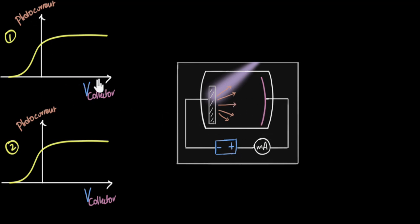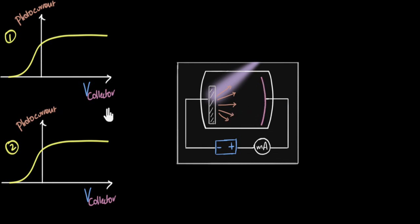When the voltage of the collector plate is positive and increasing, it starts attracting more and more electrons, and as a result, it starts collecting more and more electrons, and the current starts increasing. But after a point, it's collecting all the electrons that are emitted, and further increasing the voltage does not increase the current. And that's why we hit a saturation.